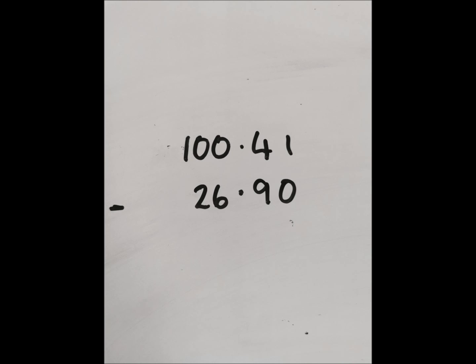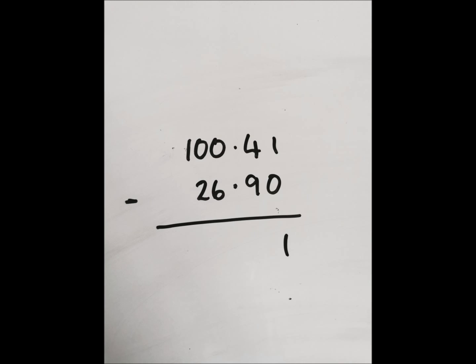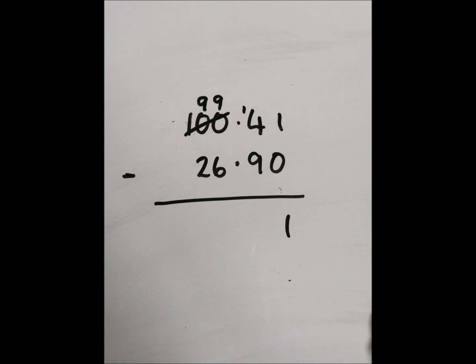So, we start off in the hundredths column with 1 take away 0. Which is 1. Into the tenths column. We've got 4 take away 9, which obviously we need to borrow for. So, what I've done here is I've gone straight to the whole number 100 and just decided to borrow 1 from 100 and make that 99. And then move the 1 over into the tenths column, making it 14 take away 9, giving us 5.